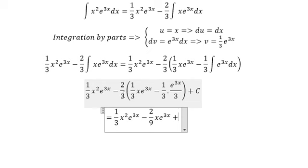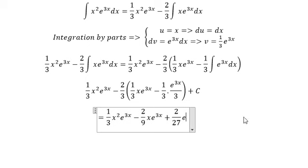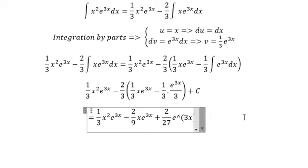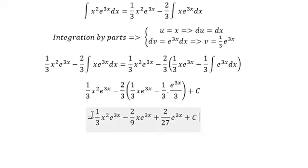And we have 2 over 3 multiplied by 1 over 3, another 1 over 3. And this is 2 over 27 e power 3x plus c. And this is the final answer.